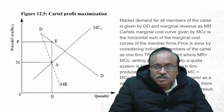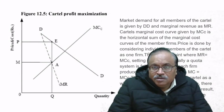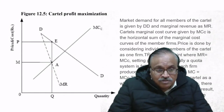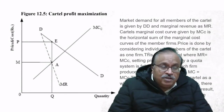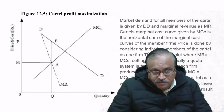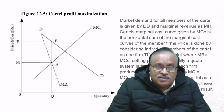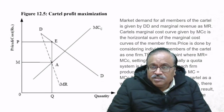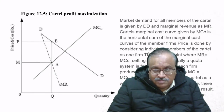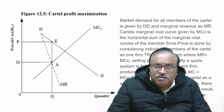How does cartel profit maximization work? The graph shows the original demand curve DD. On the y-axis we have price and cost. The market demand for all members of the cartel is given by DD and marginal revenue as MR. The cartel's marginal cost curve MCC is the horizontal sum of the marginal cost curves of member firms. Price is determined by treating all individual members as one firm.